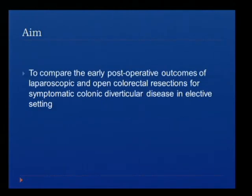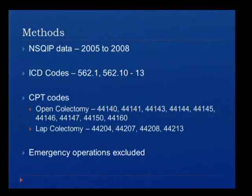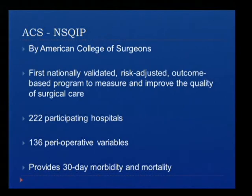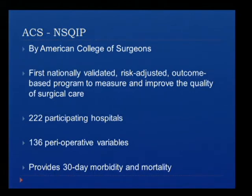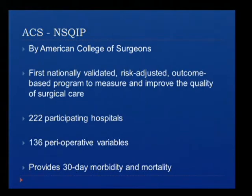Our aim is to compare early postoperative outcomes of laparoscopic and open colorectal resections for symptomatic colonic diverticular disease in an elective setting. We collected data from the ACS NSQIP Database, established by the American College of Surgeons — the first nationally validated, risk-adjusted, outcome-based program to measure and improve surgical quality. There are around 222 hospitals in this database, collecting data on 136 perioperative variables, allowing us to conclude 30-day morbidity and mortality.